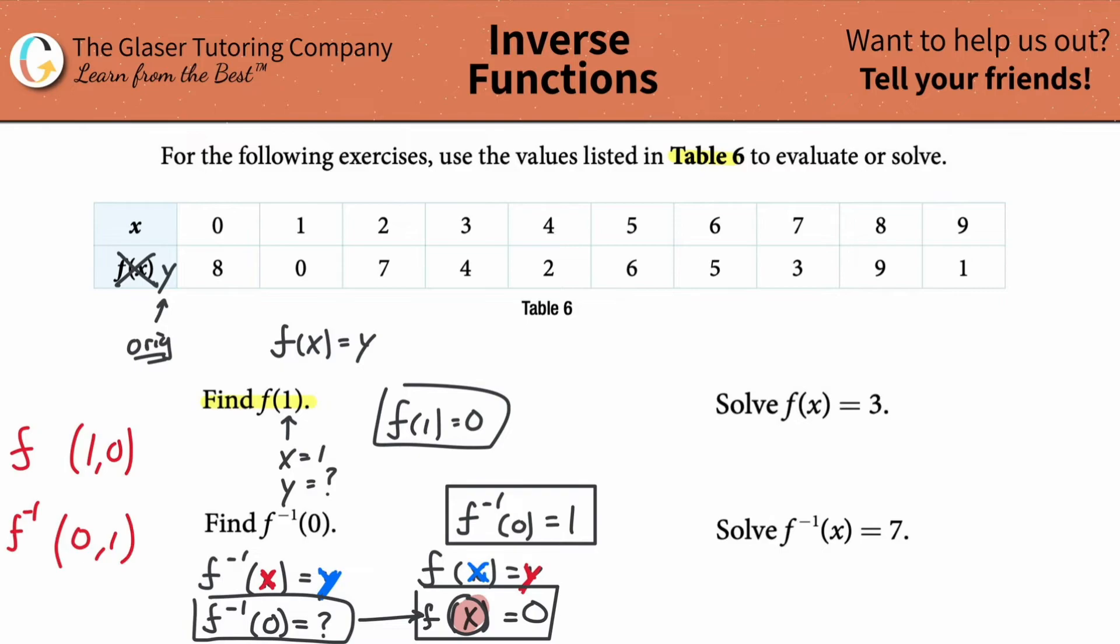For the original function, you had a coordinate of one comma zero. Then for the inverse function, all that's going to happen is the values switch. Literally the Y becomes the new X and the X becomes the new Y.